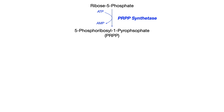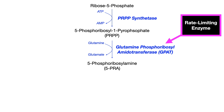PRPP is converted to 5-phosphoribosylamine, or 5-PRA, by the enzyme glutamine-phosphoribosyl-amidotransferase, or GPAT. This is the rate-limiting enzyme of de novo purine synthesis — one you absolutely need to memorize, as test writers love to ask about rate-limiting enzymes. Note that in this step, glutamine is converted to glutamate, making glutamine the first required substance we can identify.